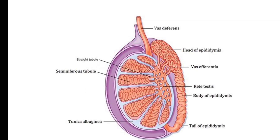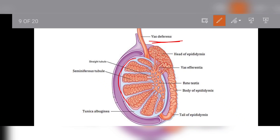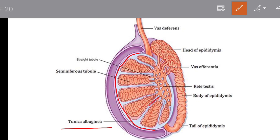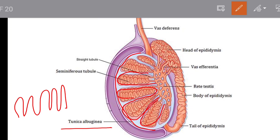Looking at the internal structure of the testes, the testes are covered by a capsule-like tough fibrous layer of connective tissue called the tunica albuginea. Within each lobe there are 3 to 10 coiled tubules. These tubules are called seminiferous tubules, and spermatogenesis — the production and formation of sperm — takes place within the seminiferous tubules.